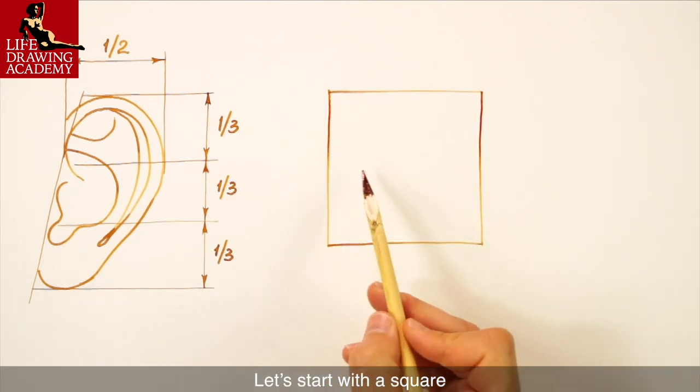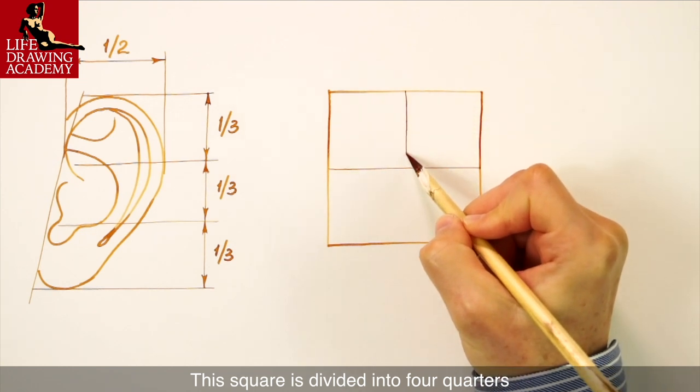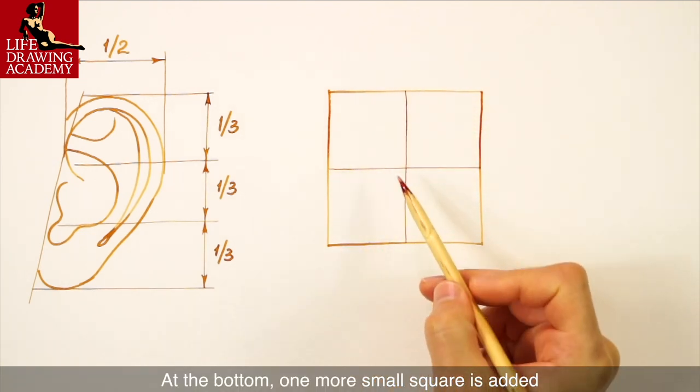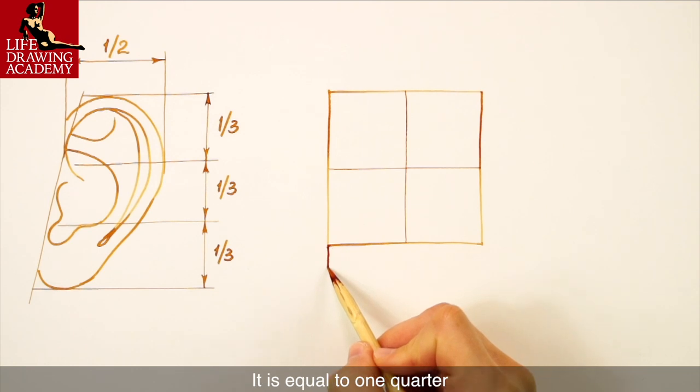Let's start with a square. This square is divided into four quarters. At the bottom, one more small square is added. It is equal to one quarter.